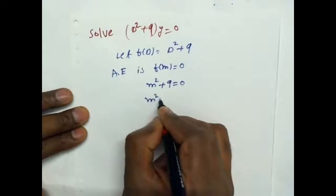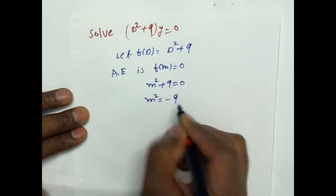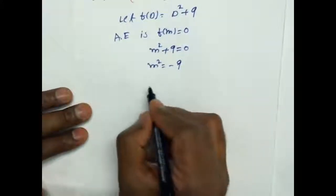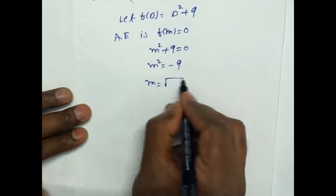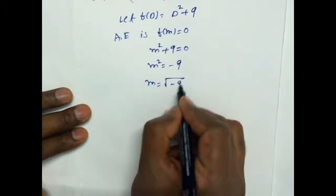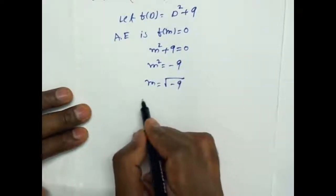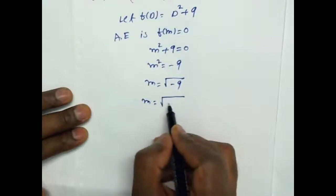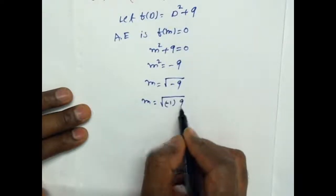So m² + 9 = 0. Now, m² = -9. That is m² = -1 × 9.